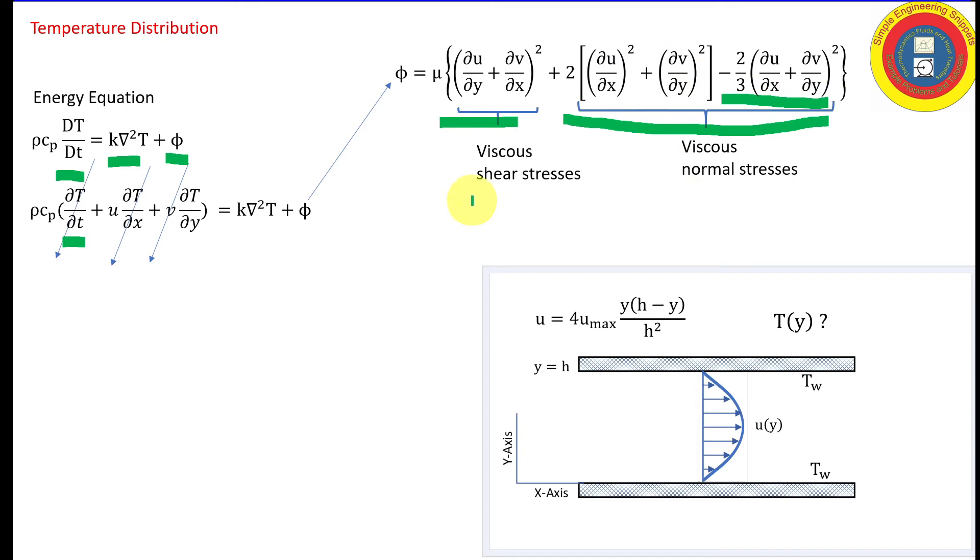Again, we're not going to be going through this stuff, but let's go through and see what terms we can get rid of. So in the first term, well, the x component of velocity is a function of y, so that term does not go away. There is no y component of velocity, so that term is going to go away.